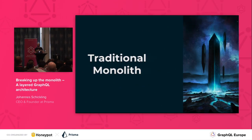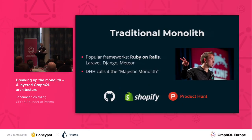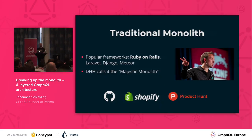Let's start with the traditional monolith, or as DHH calls it, the majestic monolith. Popular frameworks here are Ruby on Rails, Laravel, or Django in Python. This is a super successful approach, but at some point it just breaks down, so we'll look into that.